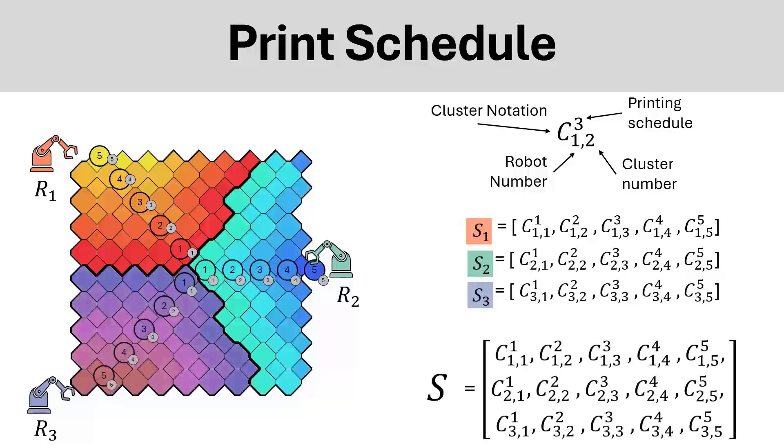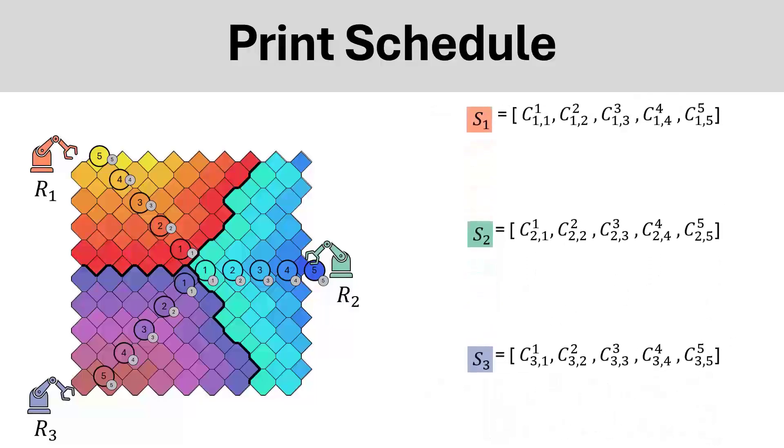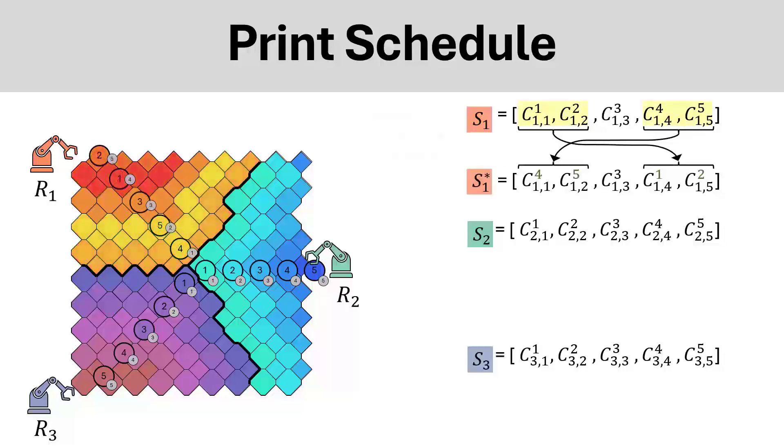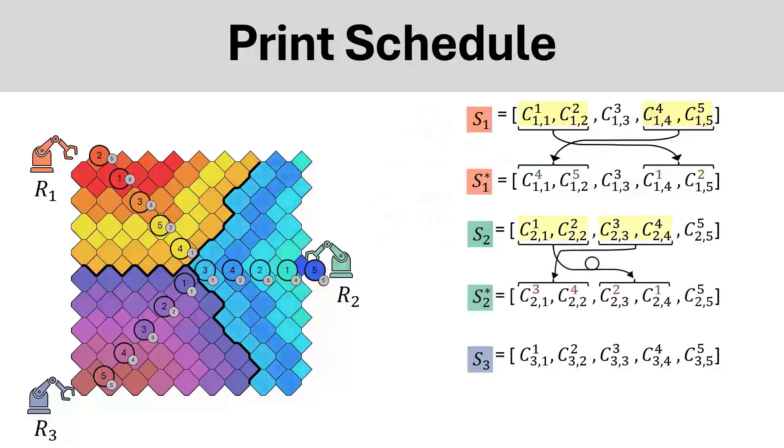However, this printing schedule probably won't work, since all robots will start printing near cells printed by other robots. So, we can change the schedule and select two subsets within a given robot's schedule and change them. So now, cluster 1 for robot 1 is printed fourth, and cluster 2 for robot 1 is printed fifth. We can do this again for robot number 2 and robot number 3.